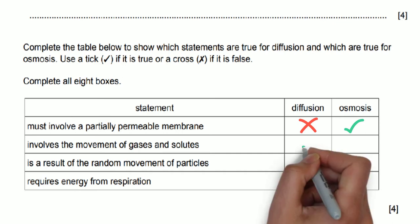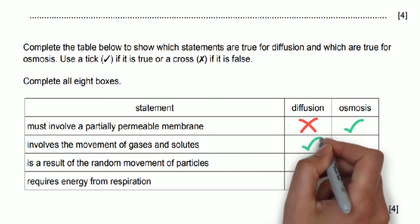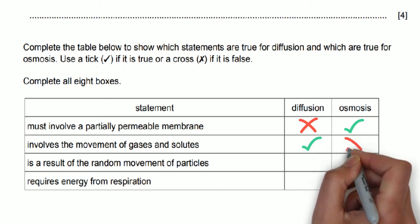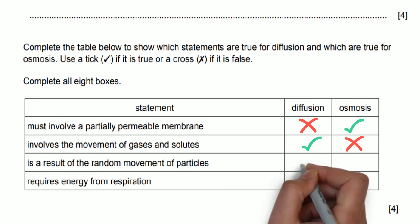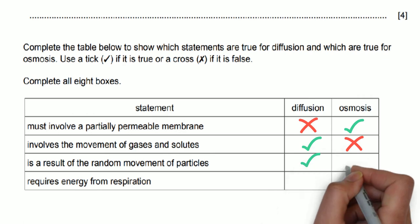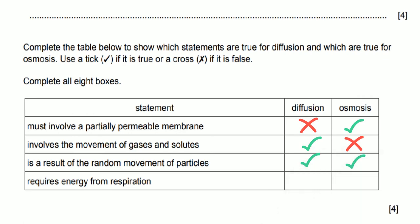The third one is a result of the random movement of particles. Well this is true for both. So when we talk about the movement we're talking about the net movement, the overall movement, but really it's just a random movement of particles. The last one says requires energy from respiration. Now neither of these require energy, only active transport.